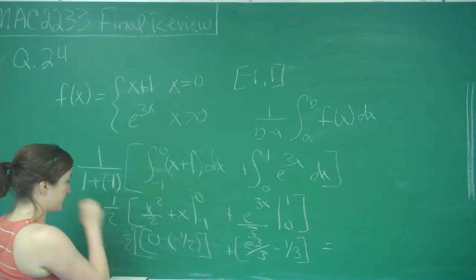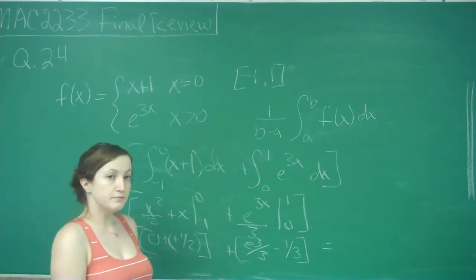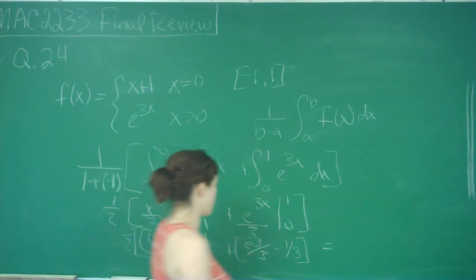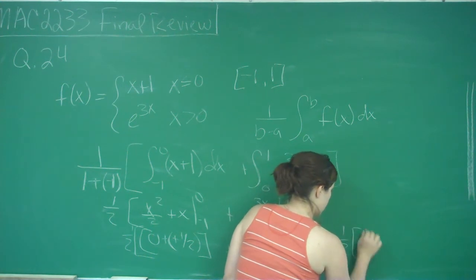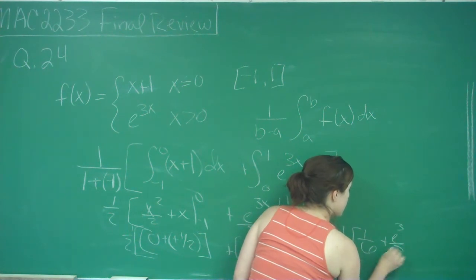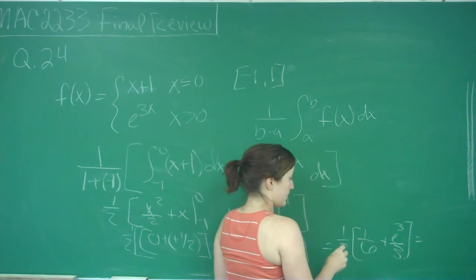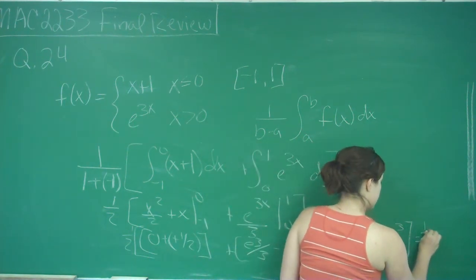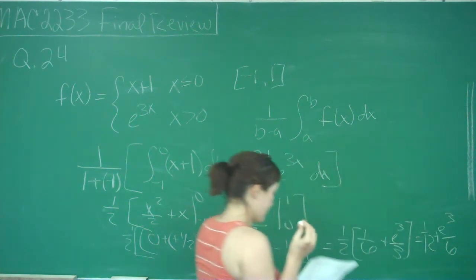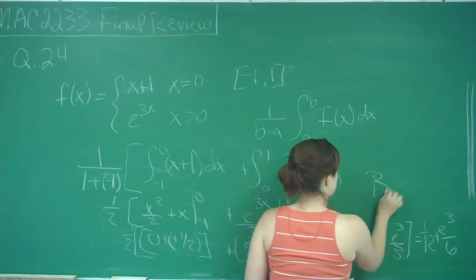So this gives me a positive 1 half minus 1 third. 1 half is 3 sixths, 1 third is 2 sixths, so that's 1 sixth. Then plus e cubed over 3, and when I multiply that in, I get 1 twelfth plus e cubed over 6, and that is answer choice B.